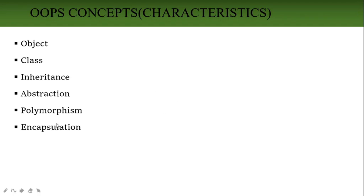Polymorphism — 'poly' means many, 'morph' means forms. The same function we are using in many forms. A single function being used in multiple forms — that is polymorphism. Examples of polymorphism are function overloading and operator overloading, which we use in OOP.